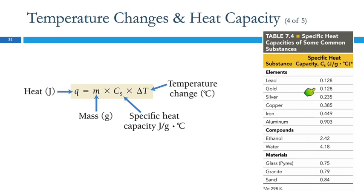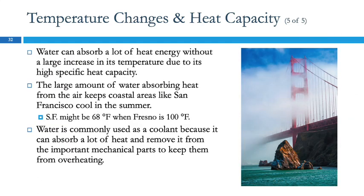So we see here that for the metals, for most of these, the heat capacity is low. If we look at compounds such as ethanol and water, we see that the specific heat capacity of water is significantly higher than the metals. And here we have glass, granite, and sand, and those are also relatively low compared to water. So we've got these variables, Q, M, C sub S, and delta T. And so if we know three of those, we can calculate the fourth.